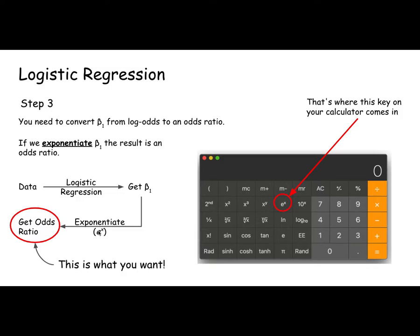So that's this key on your calculator, right? So they collect their data, they do logistic regression, they get their beta that falls out of it, then they calculate e to that beta. That's their odds ratio. That's really what you want. That's what's easier to interpret from a clinical perspective.